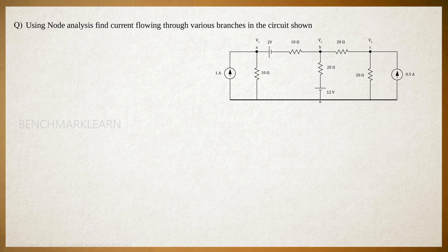Then, mark the current directions. If the direction of current is not known, that is, in the absence of a current source, we can assume that all currents are leaving the junction. First, apply KCL to node A.